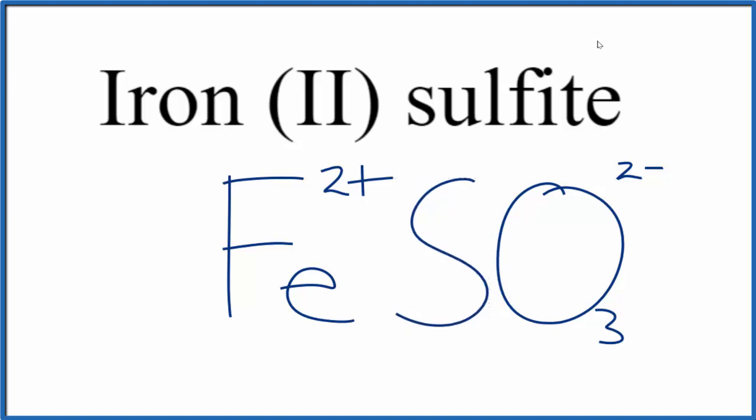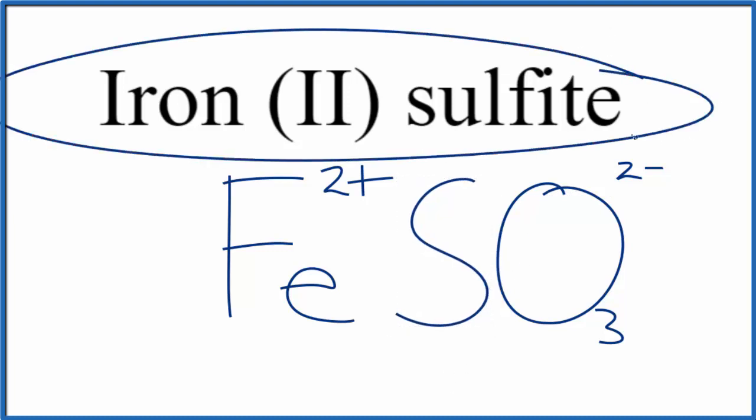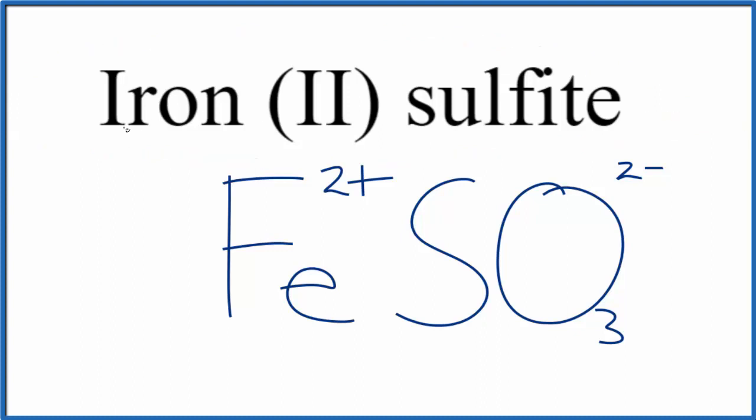So because this is a neutral compound, it doesn't say ion after it, and because we have a metal and then this polyatomic ion, a group of nonmetals, these charges need to balance. We need a net charge of zero.